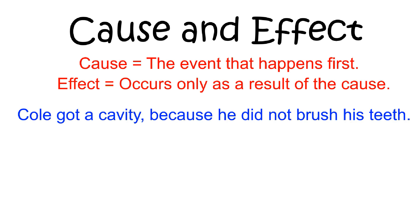In this example, there are two events. A character named Cole got a cavity, and he did not brush his teeth. But which event caused the other to happen? The event that occurred first, and thereby caused the second event to happen, is that Cole did not brush his teeth.